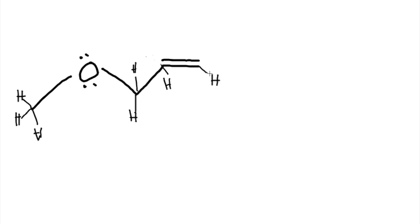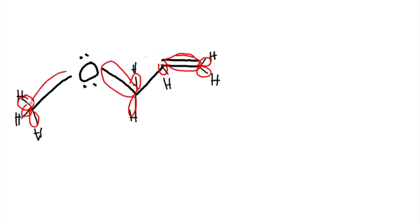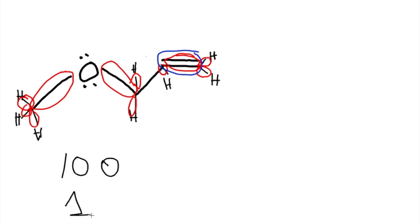And then we got another hydrogen here. Now we count the Sigma bonds and the Pi bonds. One, two, three, four, five, six, seven, eight, nine, ten — the lone pairs don't count as Sigma or Pi bonds. So in total we have ten Sigma bonds. Now let's count the Pi bonds: we have a double bond here, so that's one Pi bond. So ten Sigma bonds and one Pi bond.